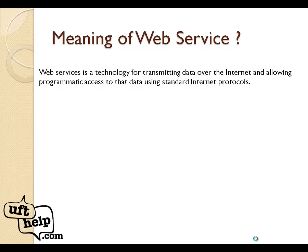Let's go into an example. Suppose I have a weather application I want to use on my website. My website is built on a .NET platform and is hosted in a Windows environment. But the weather application service I want to access is built on Java and is deployed on Linux. So how will my website interact with that weather application, which is on a different platform, different environment, and different server? Here comes the concept of web services.